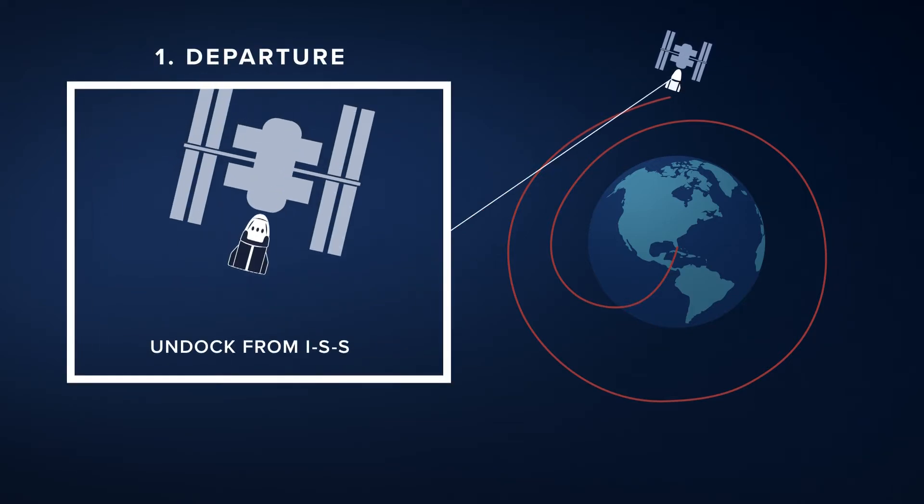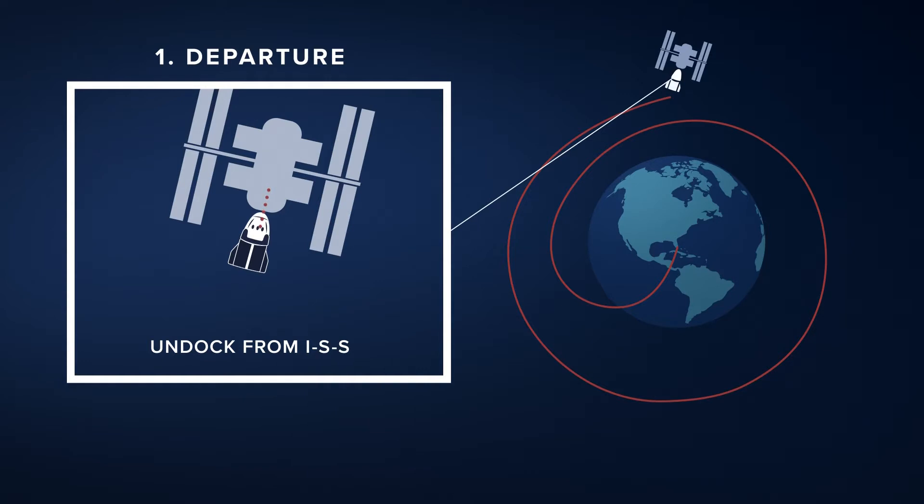The first step is to undock from the ISS. After the capsule has been packed up and prepped for undocking, Dragon will back away and slowly make its way outside of the Keep Out Sphere, a safety zone around the orbiting laboratory.